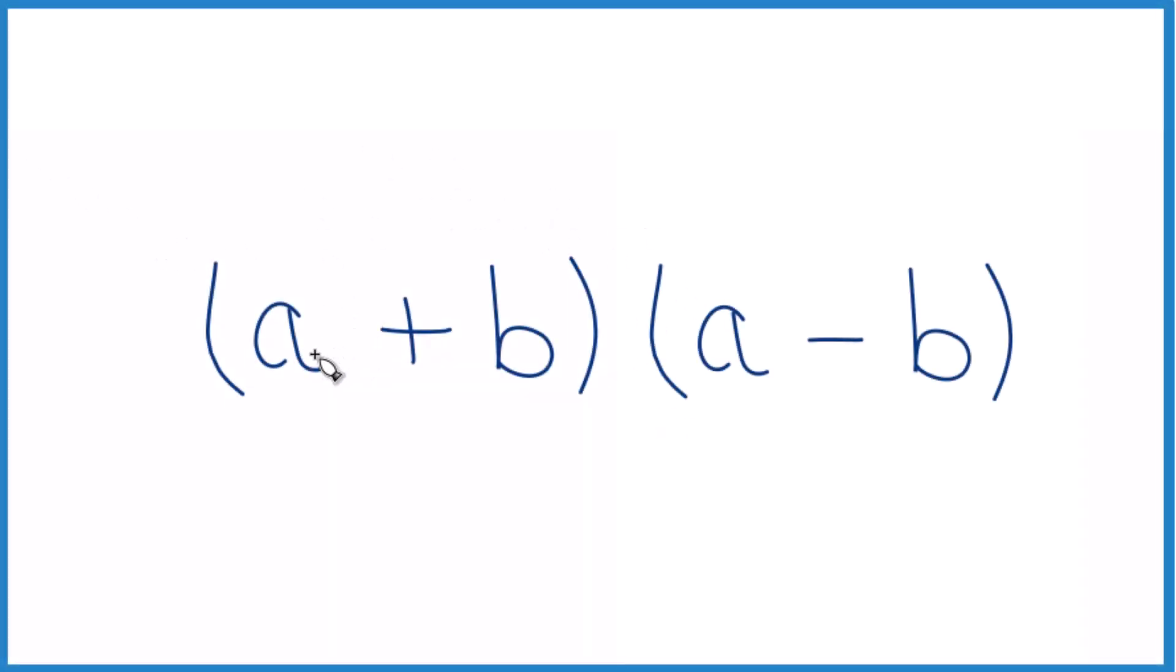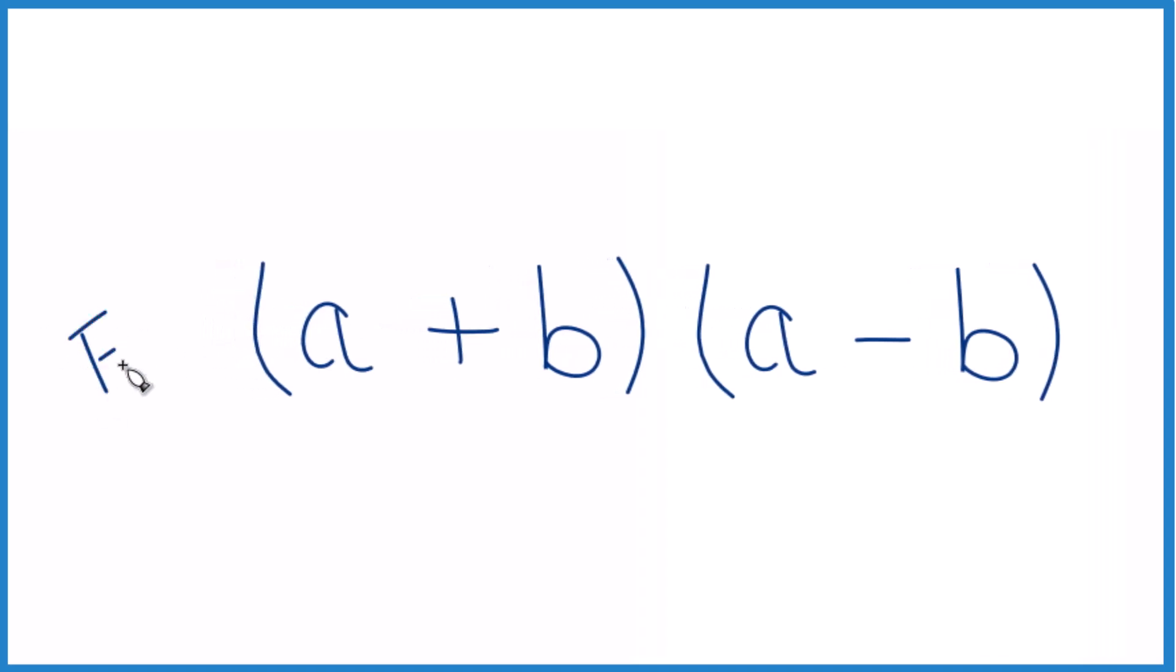Let's expand this here. We have a plus b times a minus b. So the quantity a plus b multiplied by the quantity a minus b. We're going to use the FOIL method to do this.